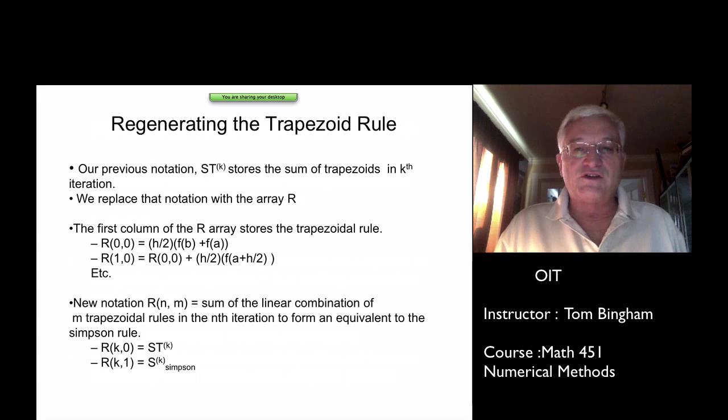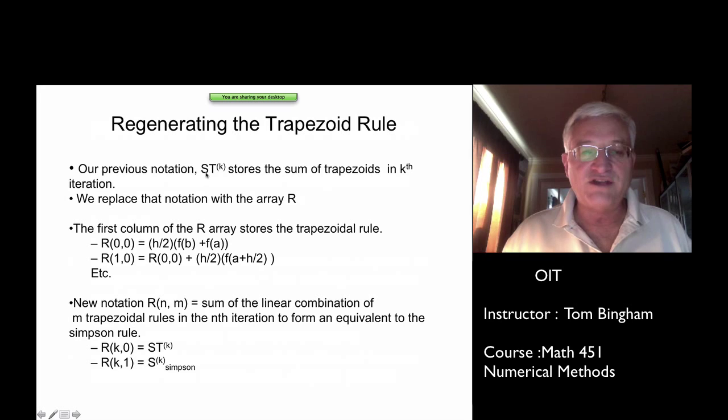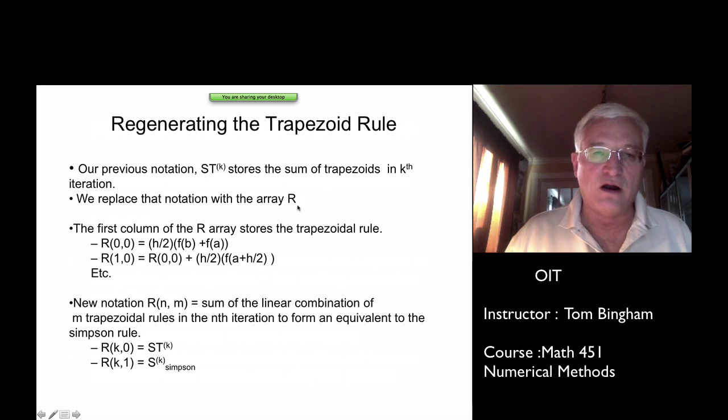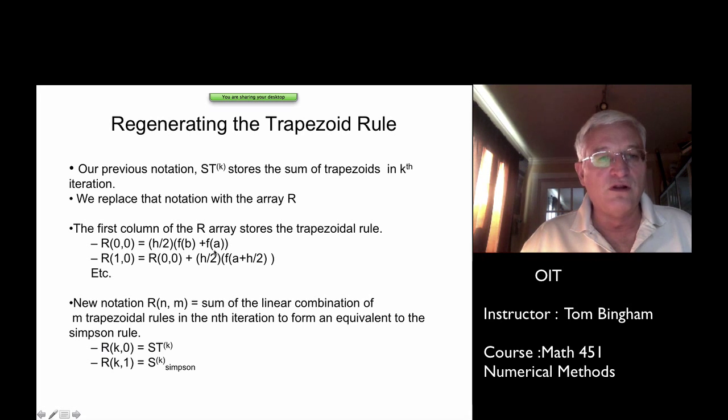So let's just go back to our trapezoidal integration again. This is the one that's fairly straightforward, and so we're going to now be moving from this previous notation of S sub T, and we are going to take that and put it in the first column of some array and we're going to call the array R. The upper left-hand corner we'll call R(0,0), and it will simply be the trapezoid rule applied to the whole interval.